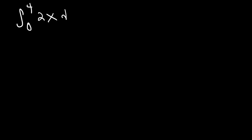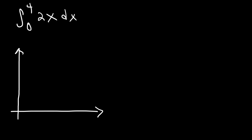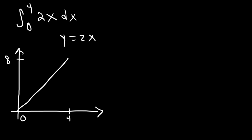Now let's try another example. Use geometry to evaluate this definite integral. So let's begin by graphing 2x from 0 to 4. Basically it's a straight line with a slope of 2. So let's say this is 0 and this is 4. When x is 4, y which is equal to 2x is going to have a y value of 8. So we need to determine the area of the shaded region.